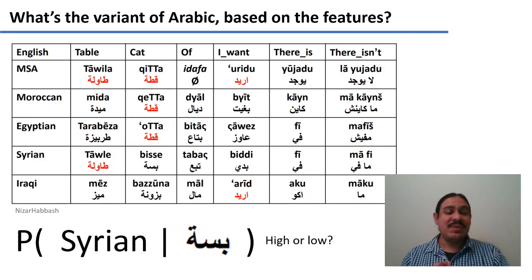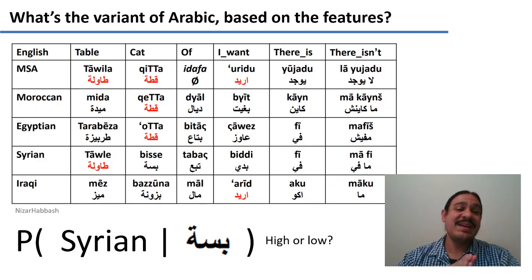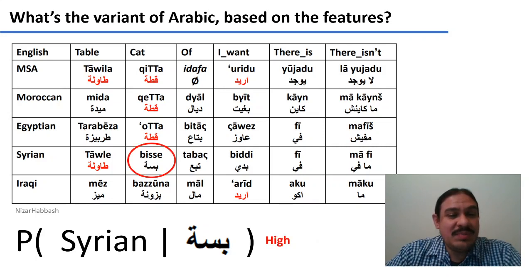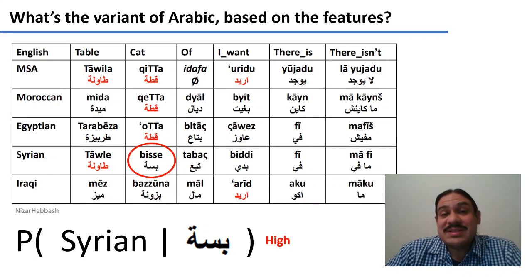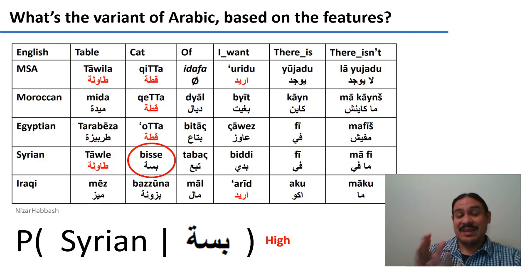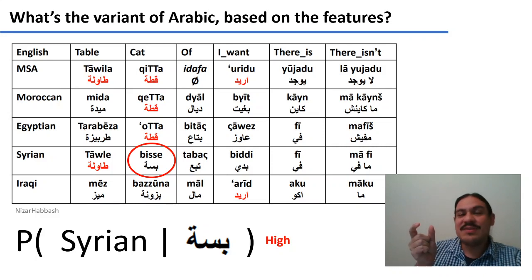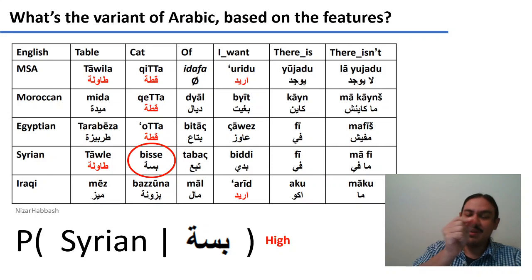Let's look at a final one. If you have that sequence, what is the probability that a document is written in Syrian Arabic? The probability is probably very high, because the word Bisse is only present in Syrian — it's not present in the other dialects. Finding this word in a document tells you that it's probably written in Syrian Arabic. So you can see how a feature like the form of the word cat can be very informative for the Syrian label, but not informative for labels like Modern Standard, Moroccan, or Egyptian.